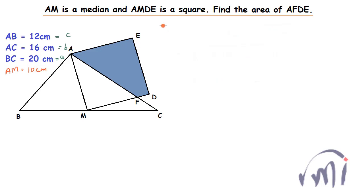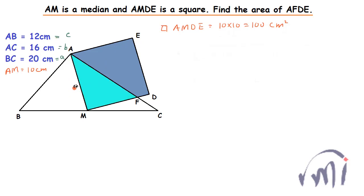So the area of square AMDE will be equal to 10 multiplied by 10, that is 100 centimeters square. Now what we have to do is subtract the area of a triangle from the area of the square, so let's find the area of that triangle.